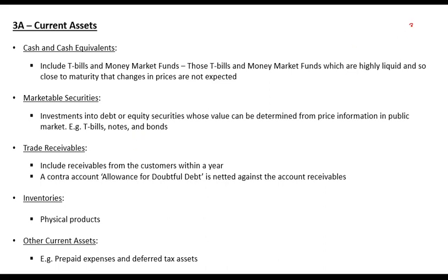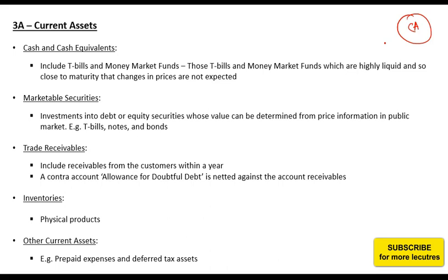The first item in the balance sheet is current assets. Current assets are assets that have a life of less than one year, or resources through which economic benefits are expected to flow to the organization within a year. Key examples include cash and equivalents, marketable securities, trade receivables, inventories, and other current assets.